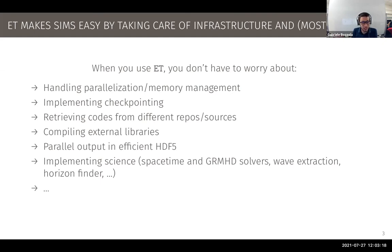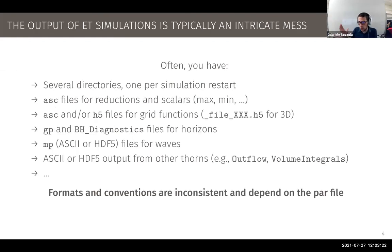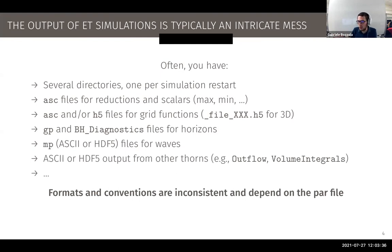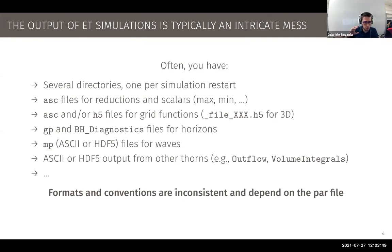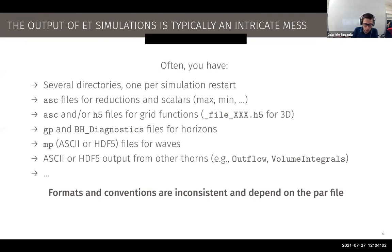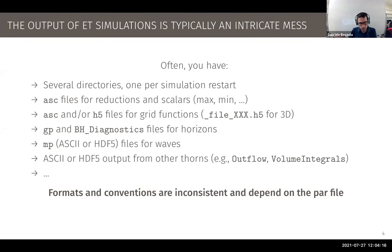The output of the Einstein Toolkit is not really friendly. Often you have a lot of directories — one per simulation restart — and many different files inside: ASCII files for reductions and scalars, ASCII and HDF5 files for grid functions, different kinds for 2D or 3D grid functions. These files may contain metadata or headers. You also have files for horizons and waves, possibly ASCII or HDF5. Other thorns have their own file formats too, like HUSKy or HDF5. There's a zoo of different files, formats, and conventions — a lot of overhead when you just want to look at the data.